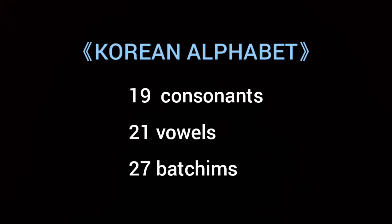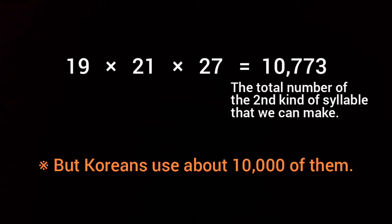The Korean alphabet consists of 19 consonants, 21 vowels, and 27 받침. So, we can make 10,773 syllables mathematically. But Koreans don't use all of them — I heard that Koreans use about 10,000 of them in daily life.